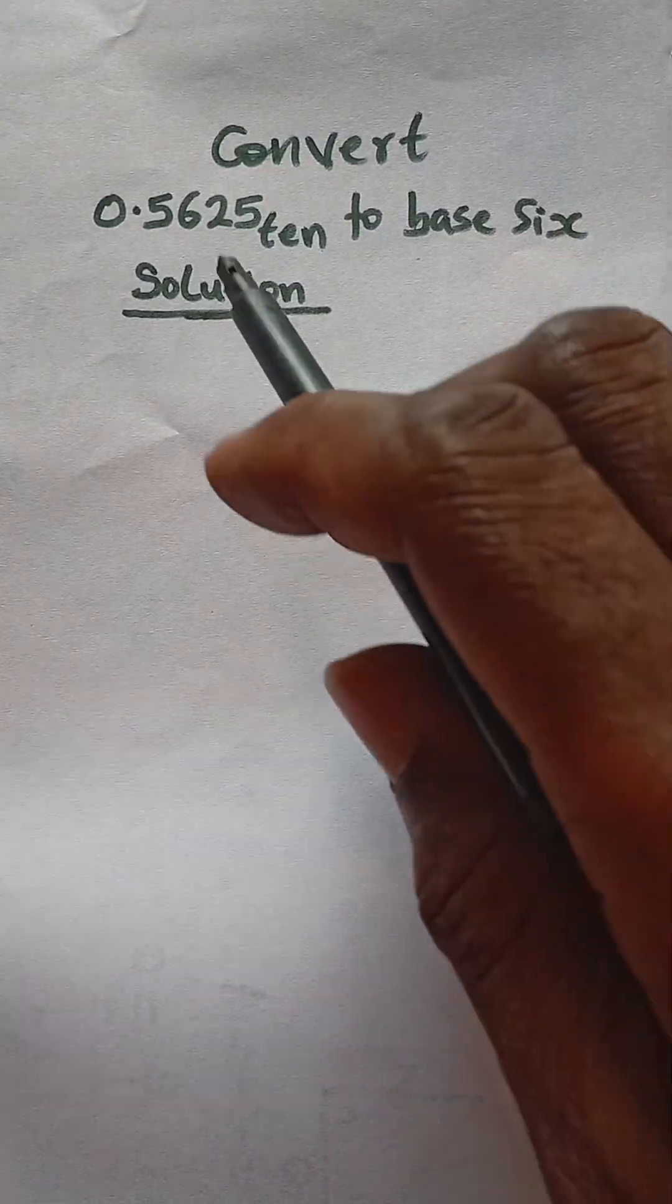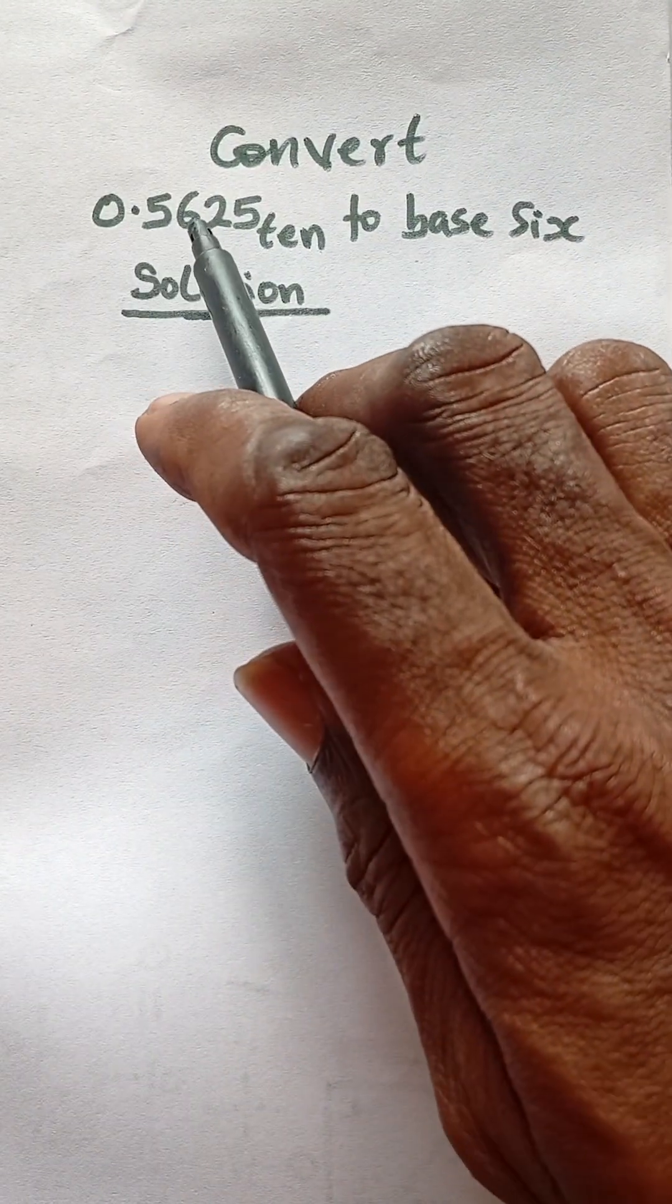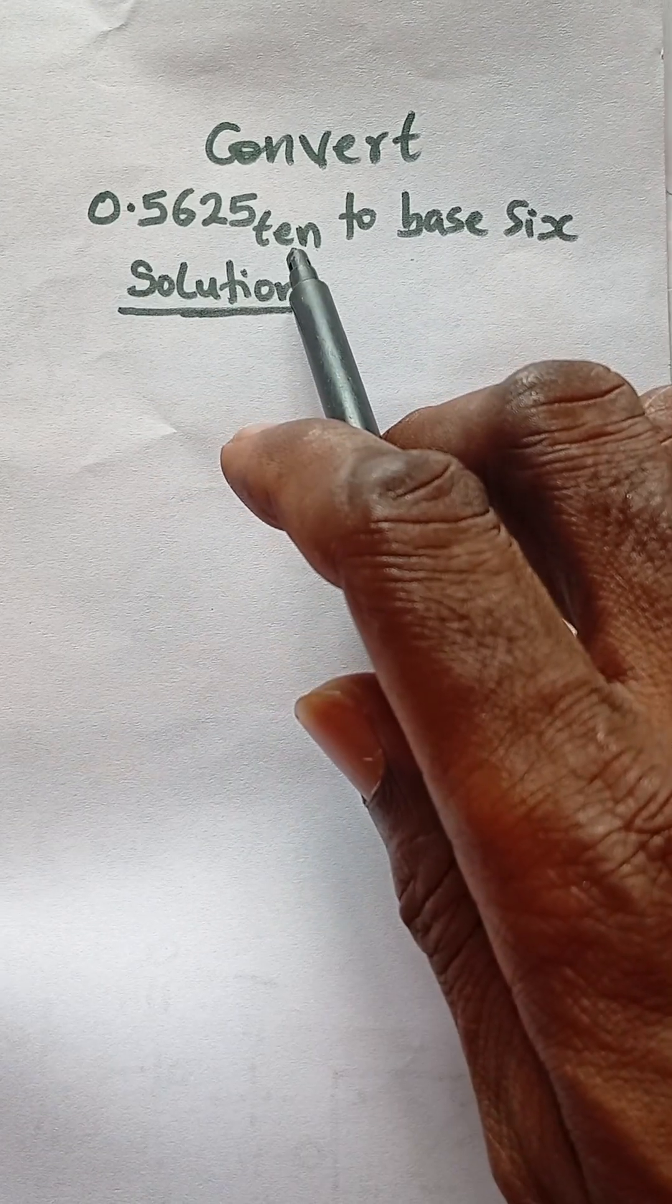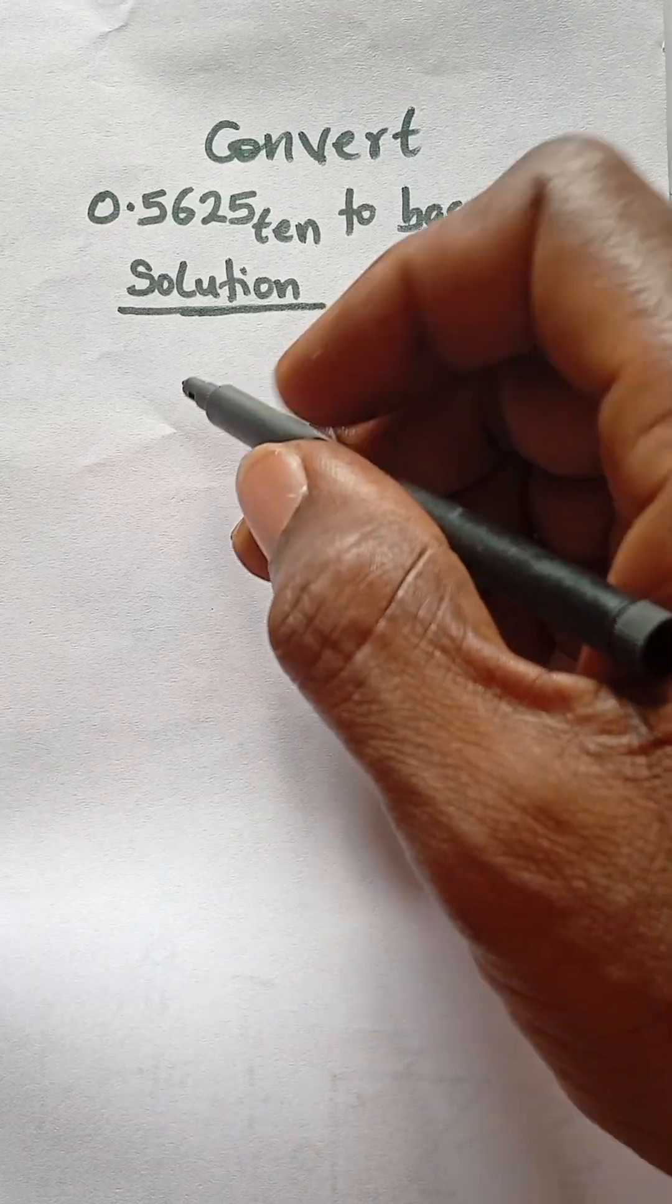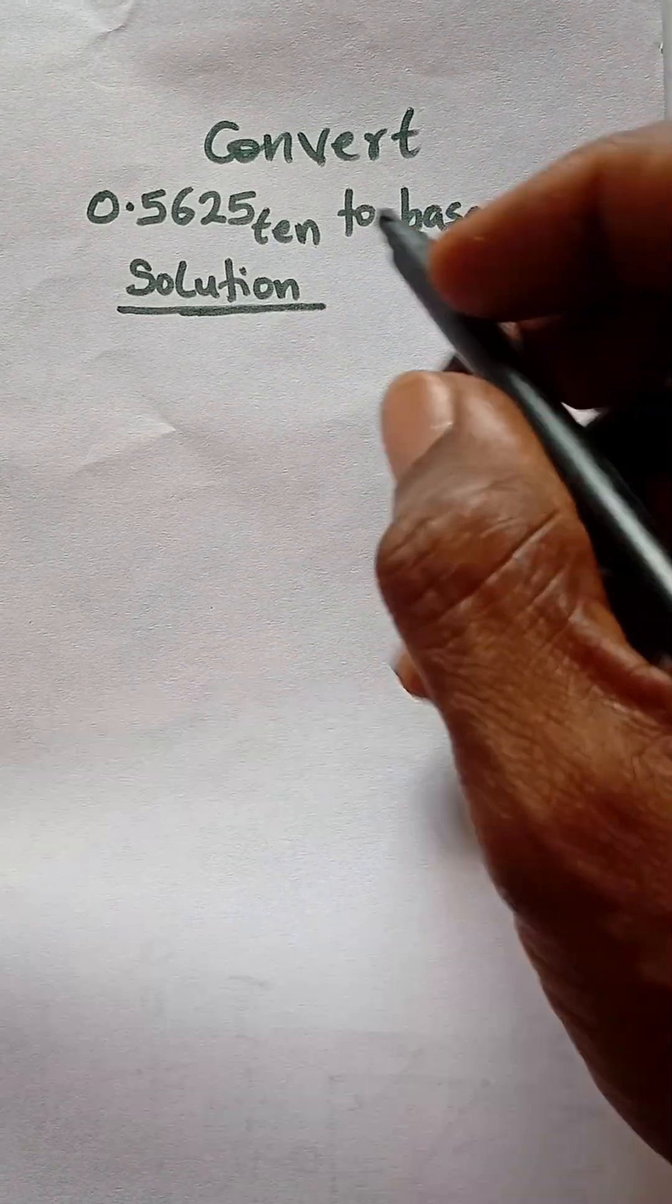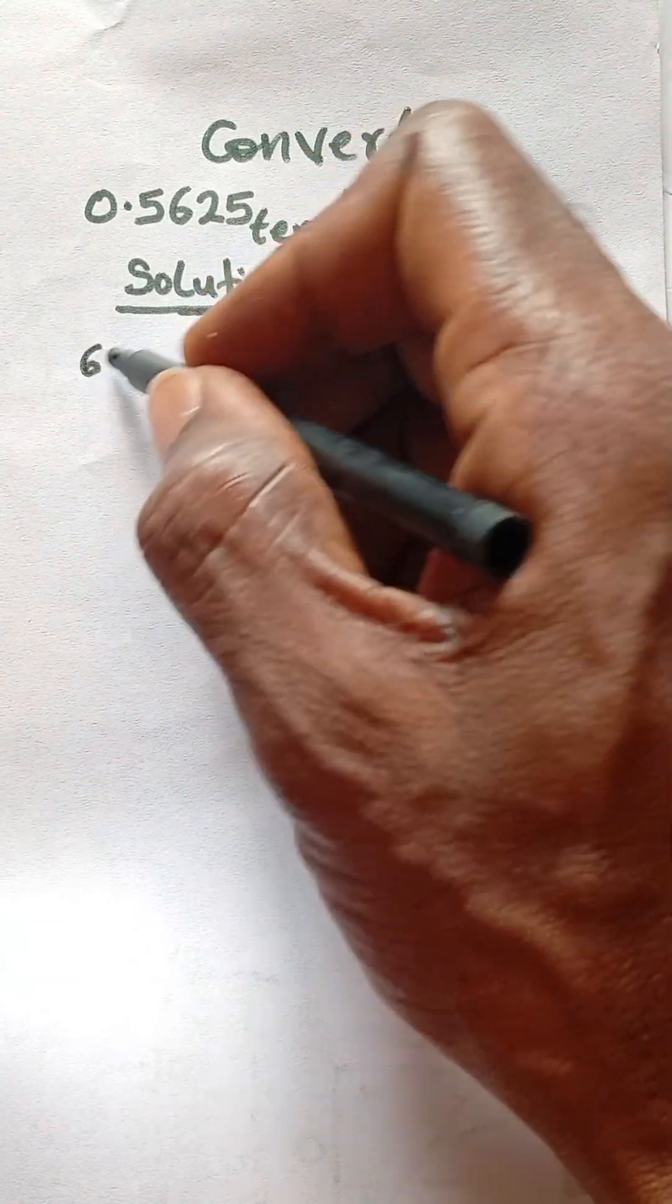Let us see how we can easily convert the number 0.5625 in base 10, that's a decimal number, to base 6. In order to do this, what you simply do is take this 6 here and then you use